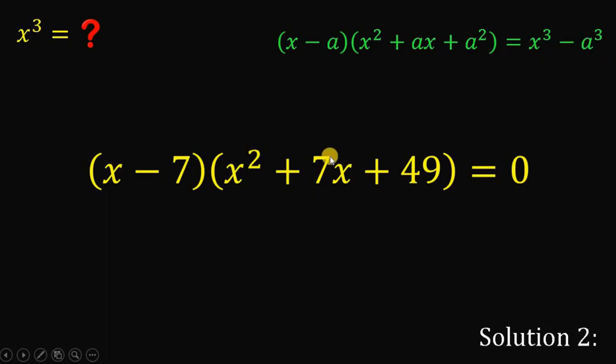Now, if a is equal to 7, then a squared is just 49. So, this fits in this identity. And it is equivalent to x cubed minus 7 cubed.